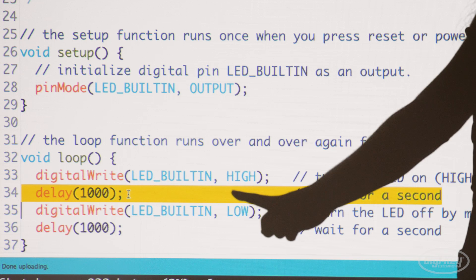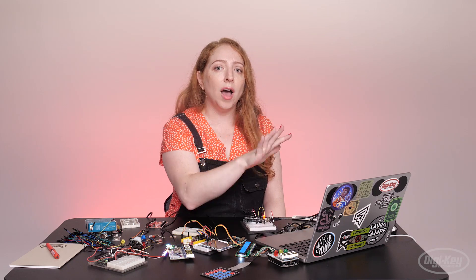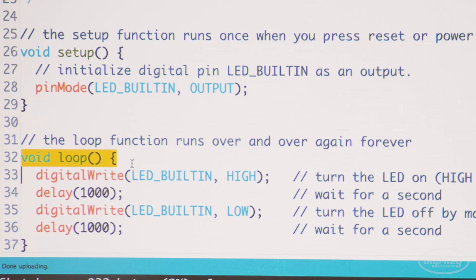To pause the program, we're using delay, which pauses for a number of milliseconds. One second is 1,000 milliseconds. So to summarize, the program turns an LED on and off at 1 second intervals.